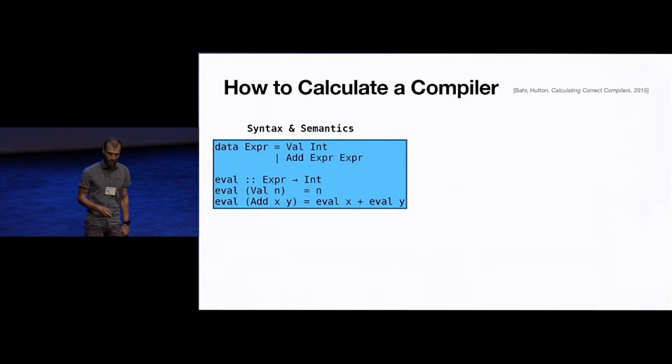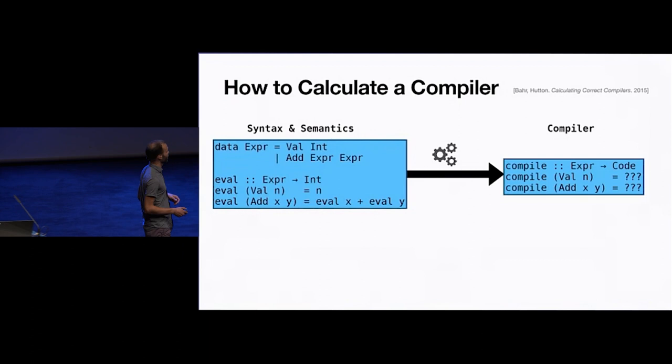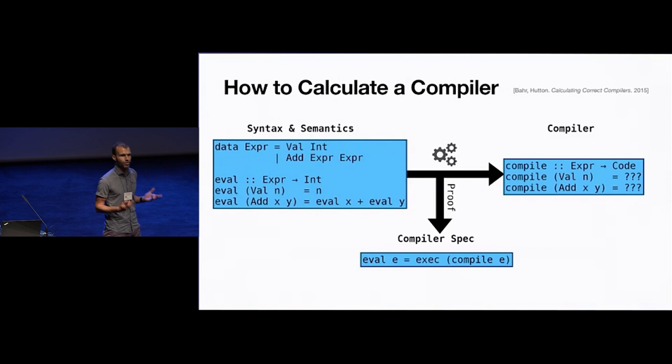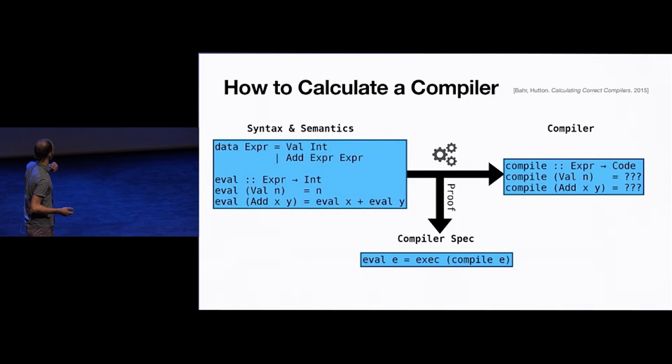Here, for a very simple language — Graham's favorite — what we want to have is to derive from that a compiler systematically. And not only that, we also want to have some kind of assurance that the compiler is correct. We want a proof of its correctness expressed as some form of equation.